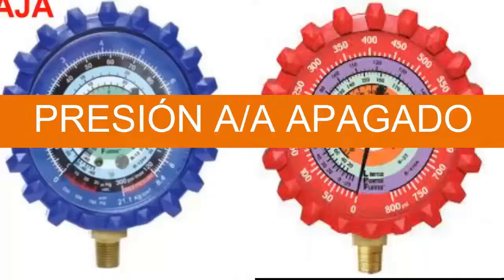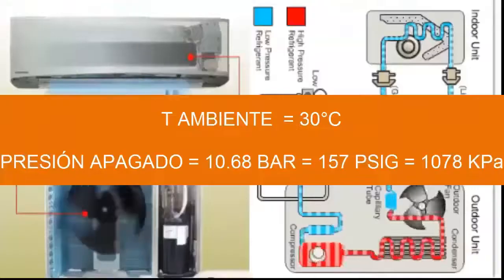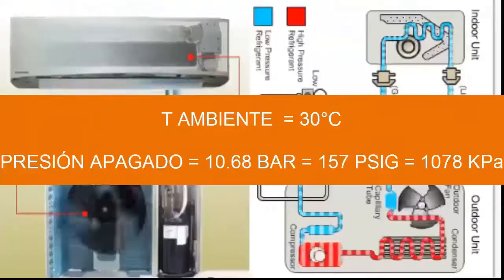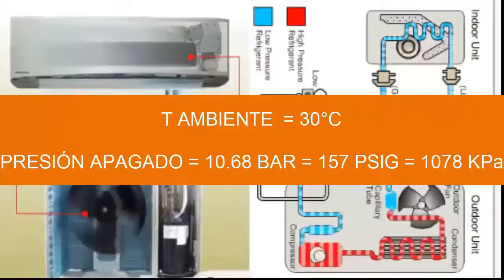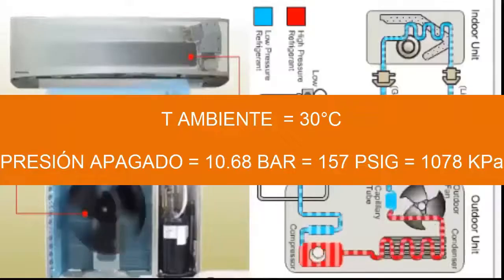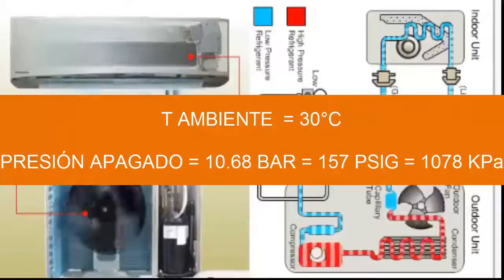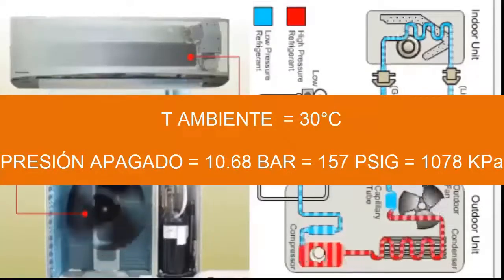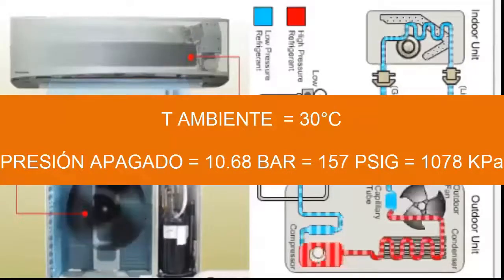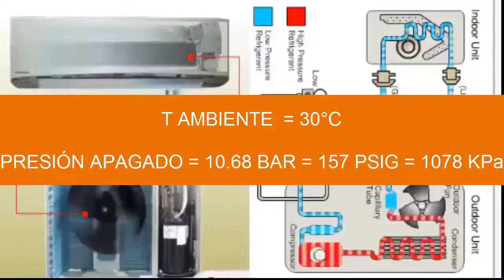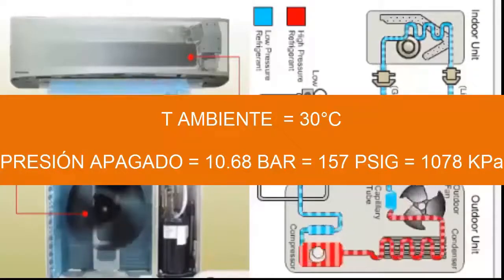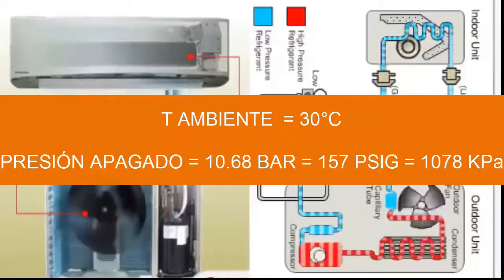For an outdoor environment temperature of 30 degrees Celsius, about 86 degrees Fahrenheit, with the equipment turned off, the gauge pressure — both high and low — according to the table is 10.68 bars, equivalent to 157 psi or 1078.68 kilopascals.